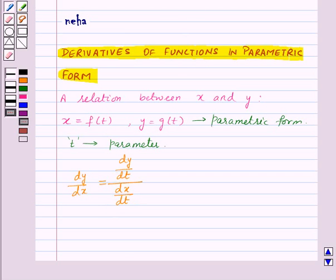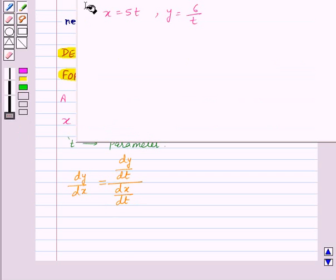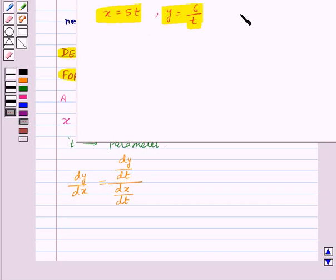Let us see one example for this. Here we are given x equals 5t and y equals 6 upon t, and we need to find the value of dy by dx.